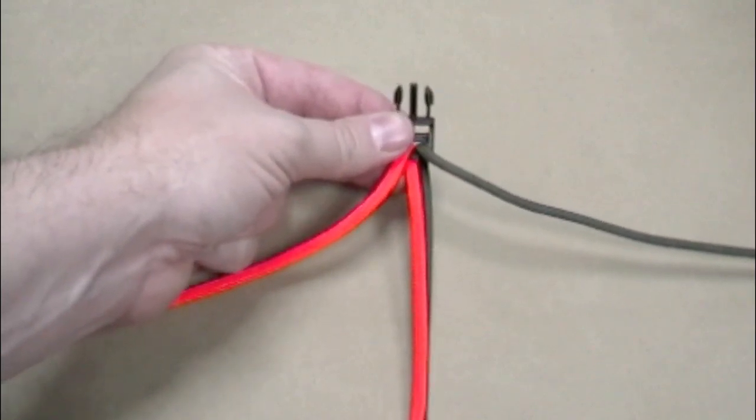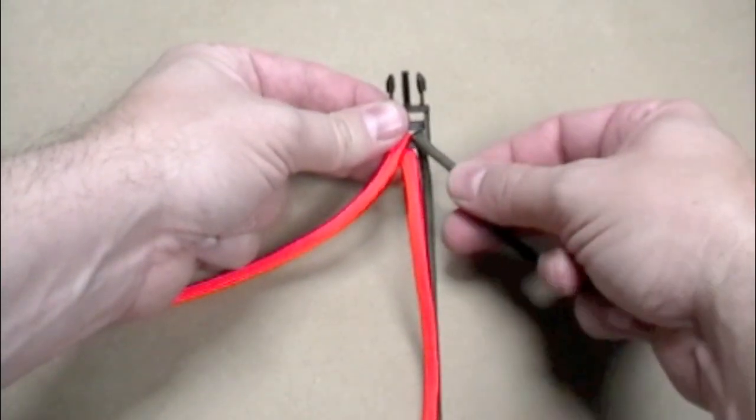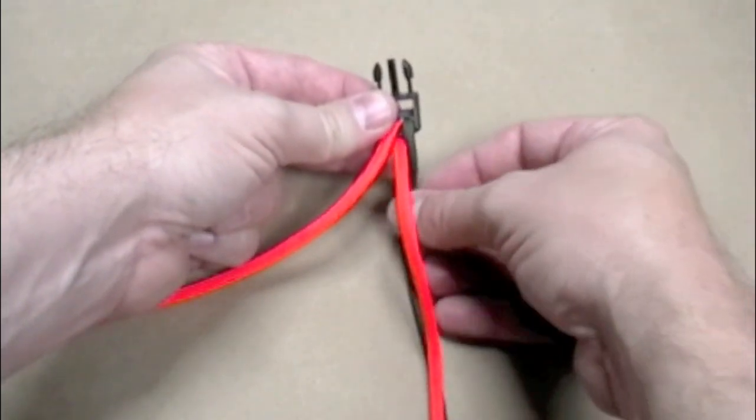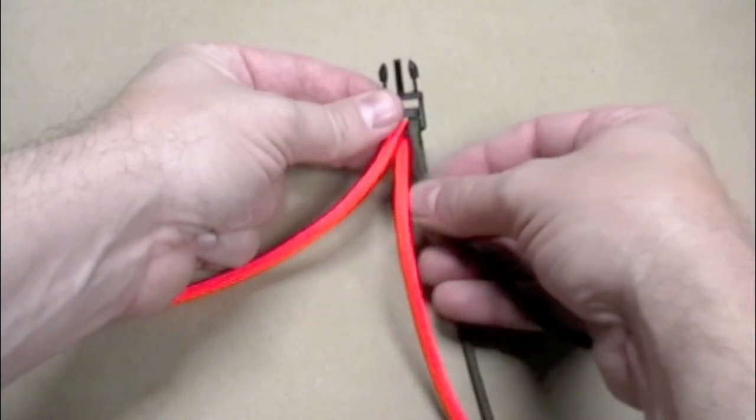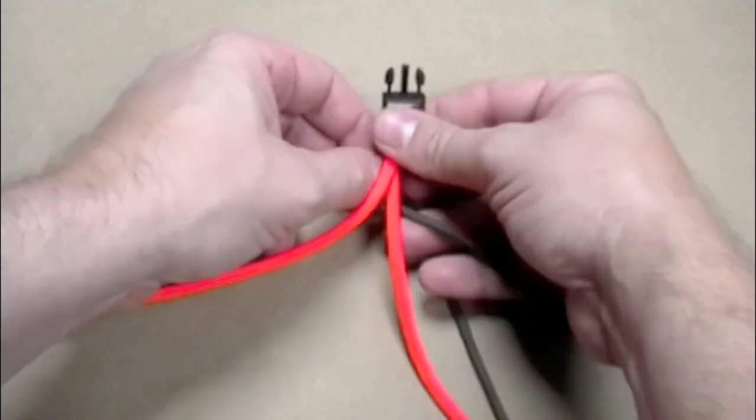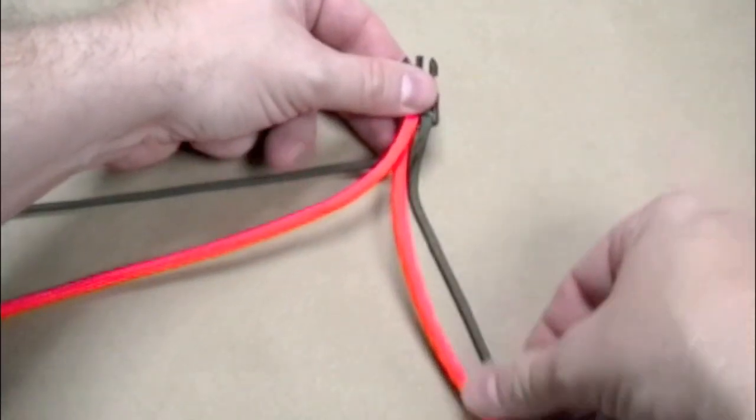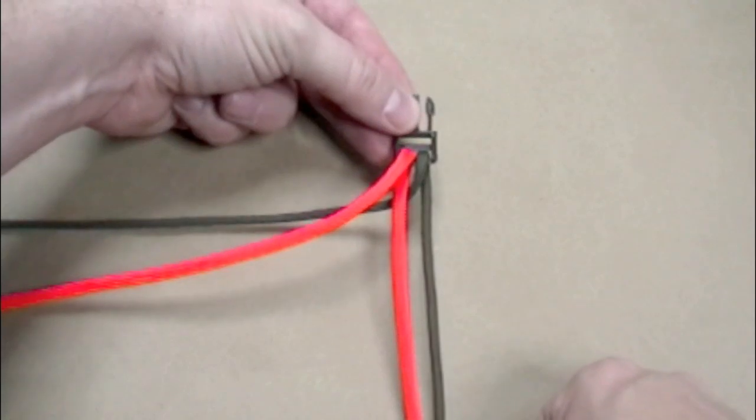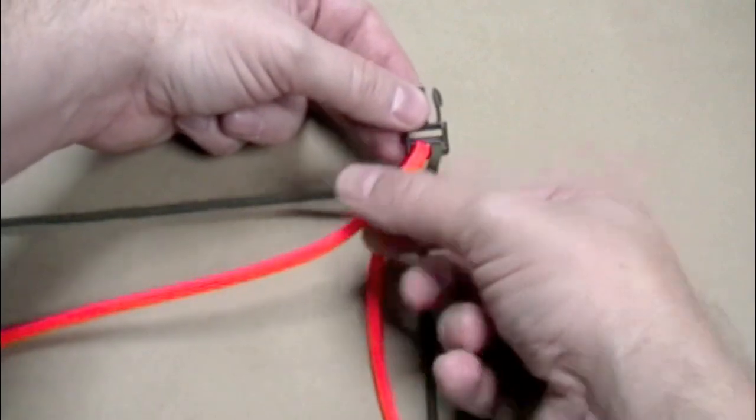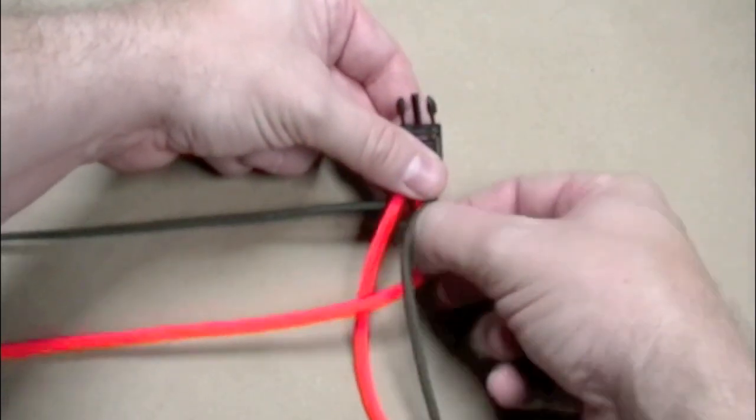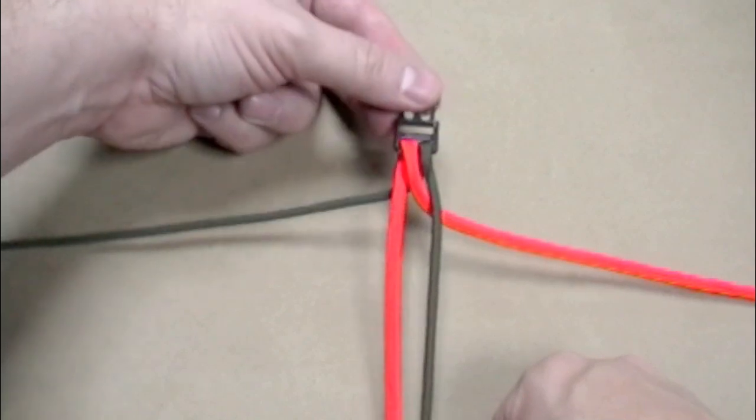To begin our weave, we're going to take the loose ends and we're going to cross under the opposite cord that's going down the center. So we're going to take the green and we're going to cross under the orange center cord and just pull it through. Now we're going to take the loose orange end and cross under the green and pull it through. You should have something that looks like that.